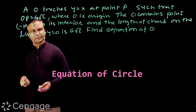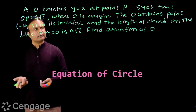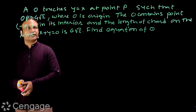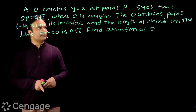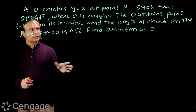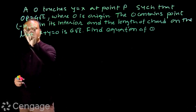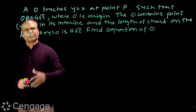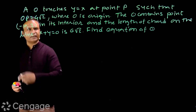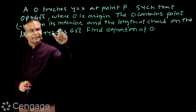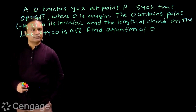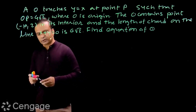Now look at this question asked in IIT JEE. A circle touches y = x at point P such that OP = 4√2, where O is the origin. The circle contains point (-10, 2). This point is in the interior of the circle and the length of the chord on the line x + y = 0 is 6√2. Find the equation of the circle.